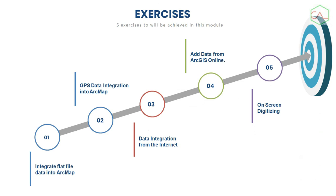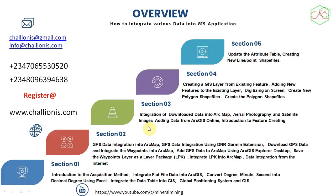We have five exercises we are going to look at. Number one is how we can integrate flat file data into ArcGIS. Secondly, we look at how GPS data can be integrated into ArcMap and also how to integrate data from the internet. The fourth one covers various online ArcGIS data and how to integrate those into ArcMap. Finally, we are going to look at digitizing on screen. These five exercises are what we are going to do.